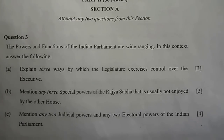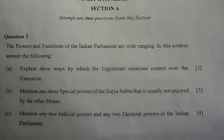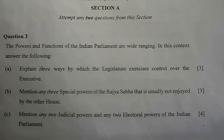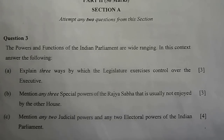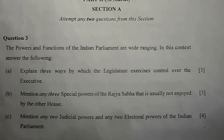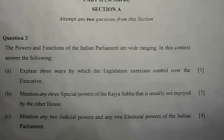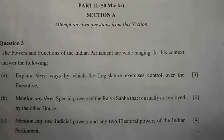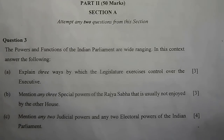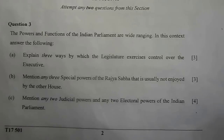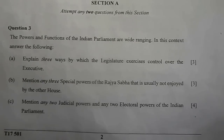Question 3. The powers and functions of the Indian parliament are wide-ranging. In this context, answer the following. A. Explain three ways by which the legislature exercises control over the executive. There are many ways by which the union parliament can control the executive. Number 1 is the question hour. In question hour, members of the union parliament can ask questions about what's happening in the country to the government so that they can get the answers.